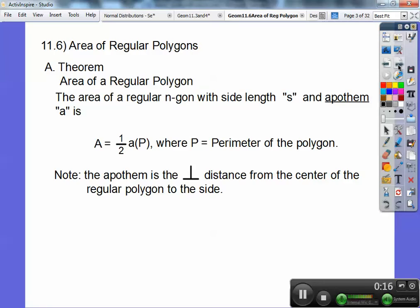So area of a regular polygon, I'm just going to jump right to the formula and describe the pieces later. The area of a regular n-gon, so say a 10-gon or an 8-gon, or that would be an octagon or a decagon. So regular means all sides are equal, all angles are equal. The area that has side length s and apothem a is you just do one half the apothem times the perimeter, where P is the perimeter of the polygon.